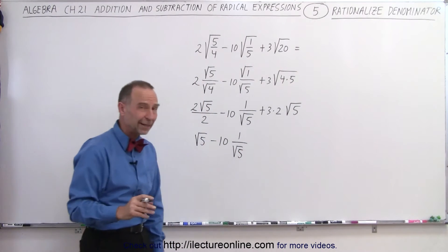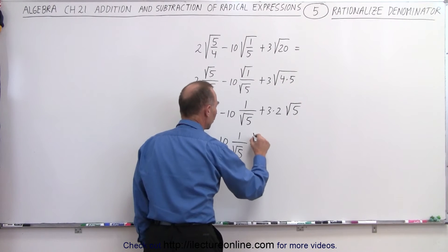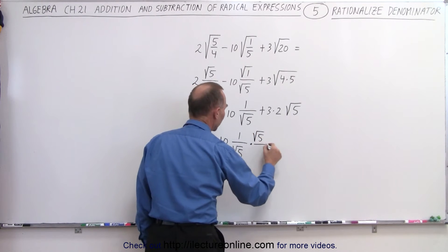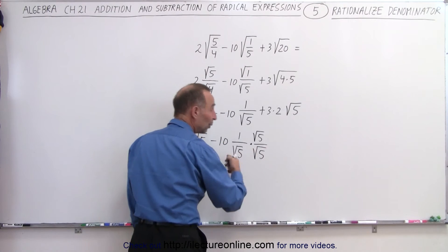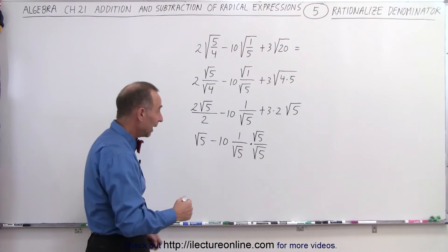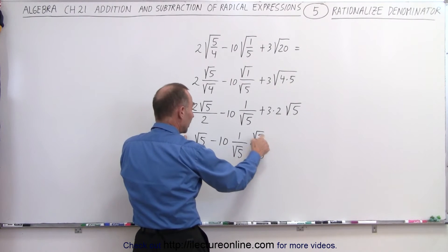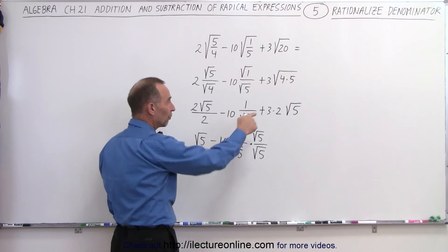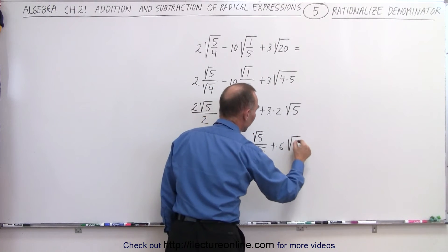Now, here we have a radical in the denominator. We want to get rid of that radical, so what we're going to do is we're going to multiply both the numerator and the denominator by the square root of 5. By doing so, we get rid of the radical in the denominator, and as an added bonus, look, we have the square root of 5 in the numerator in both terms. Over here, 3 times 2, which would be plus 6 times the square root of 5.